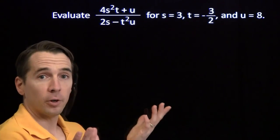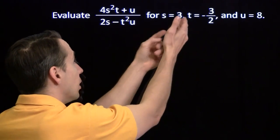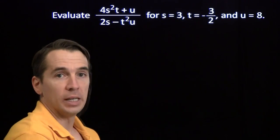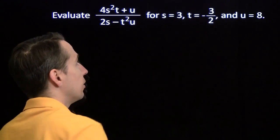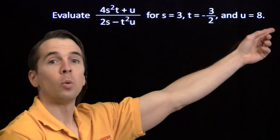Once again, first step, substitute in. Everywhere I see s, I'm going to put a 3. Everywhere we see a t, we'll put negative 3 halves. Everywhere we see a u, we're going to put 8.